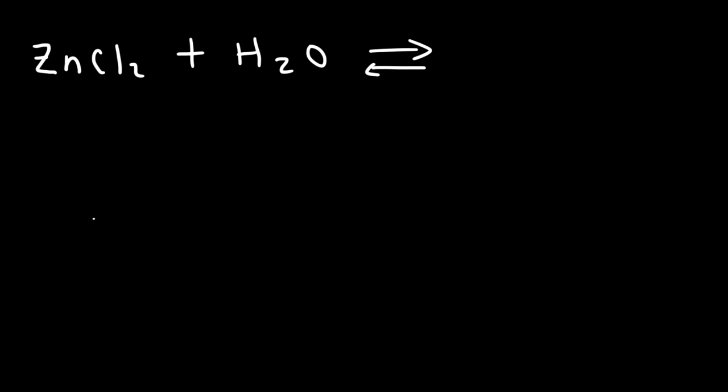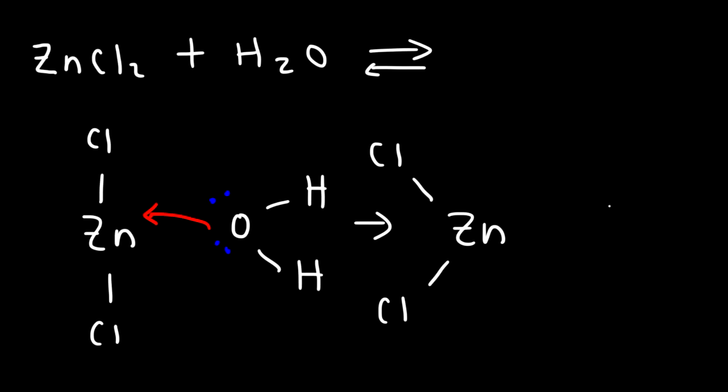Let's draw it out. I'm going to draw zinc chloride like this. And then we're going to react it with H2O. Oxygen has two lone pairs. The oxygen atom is going to attack the zinc atom. And we're going to have a trigonal planar shape around the zinc atom.